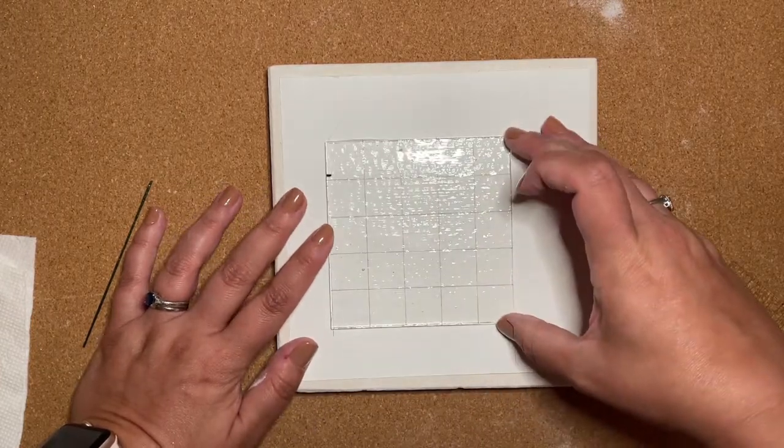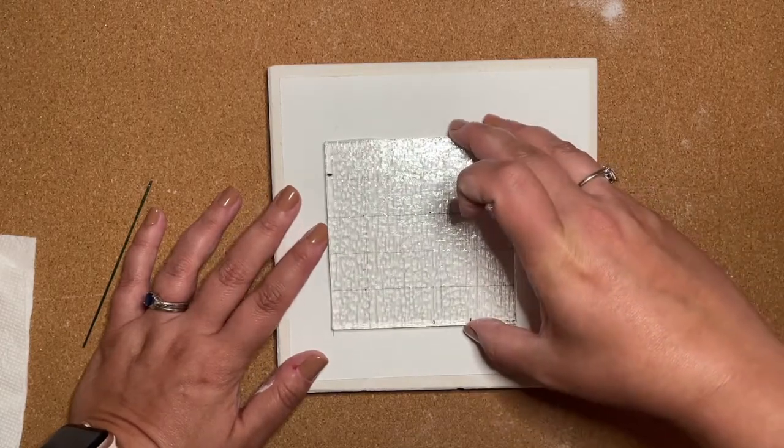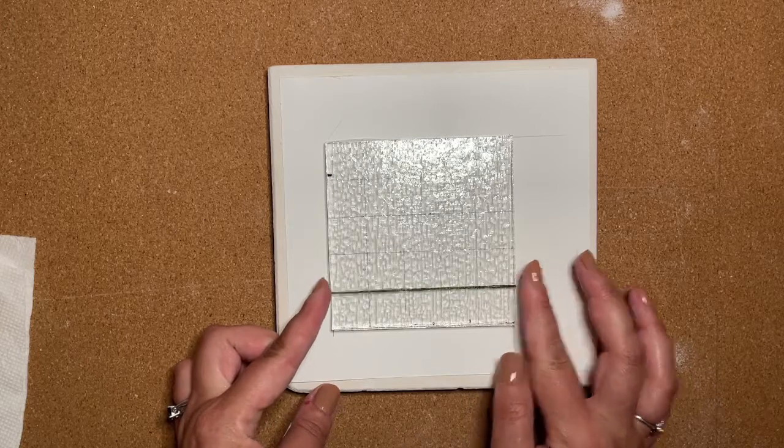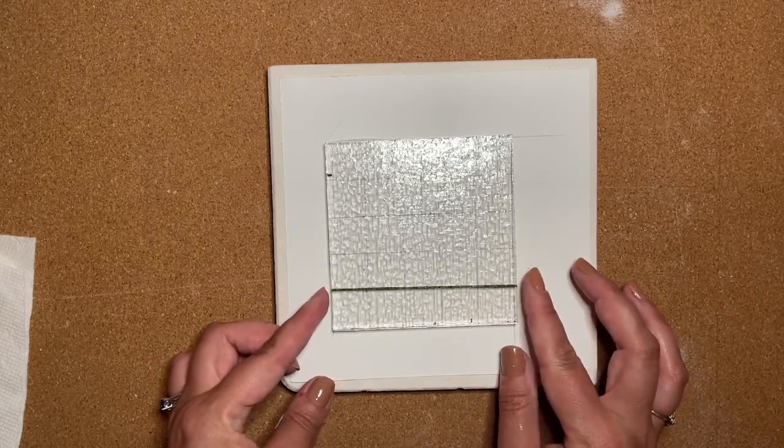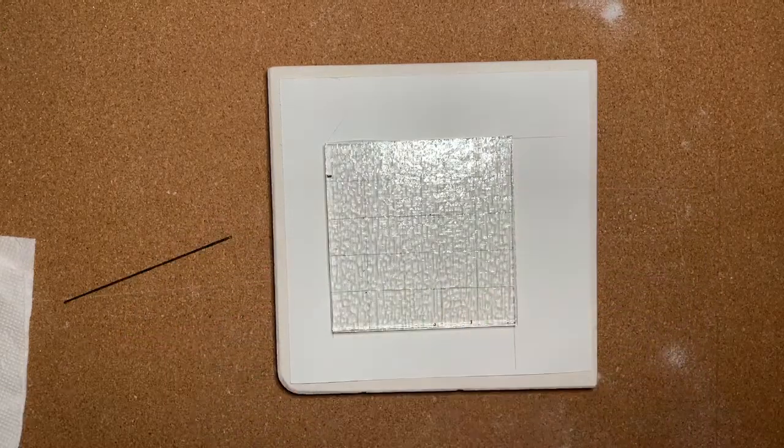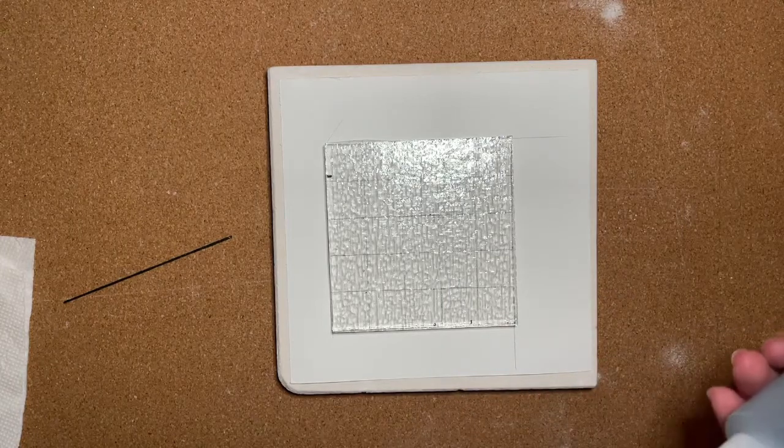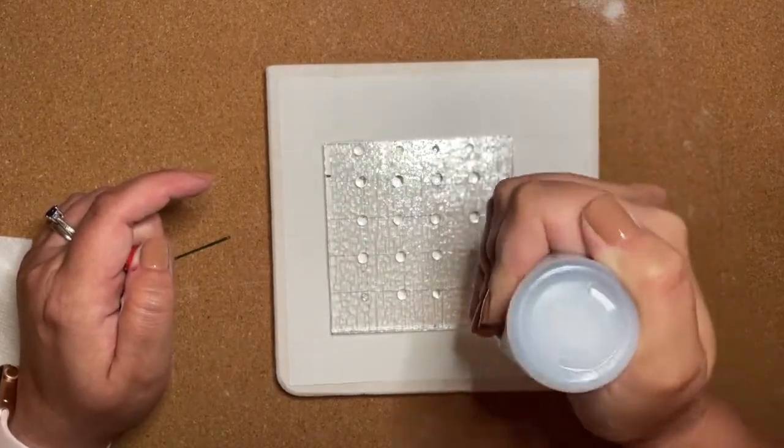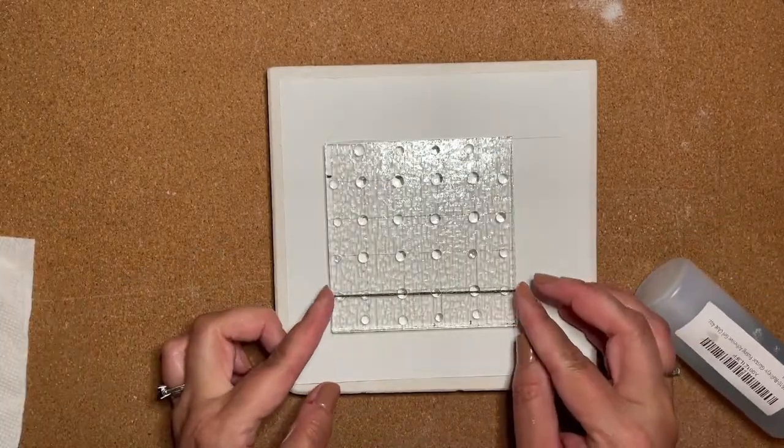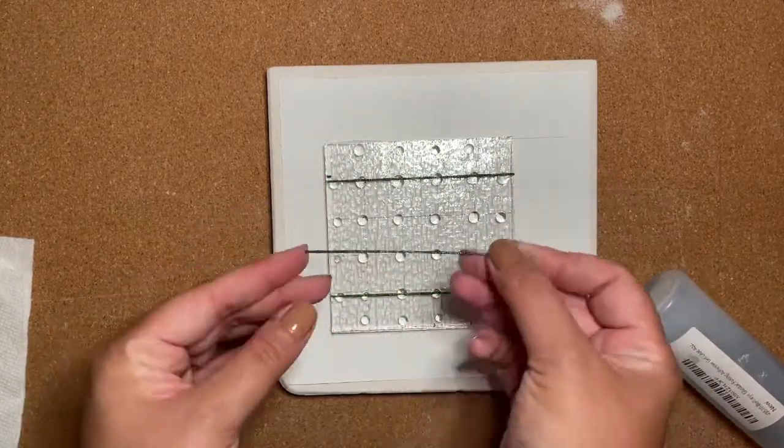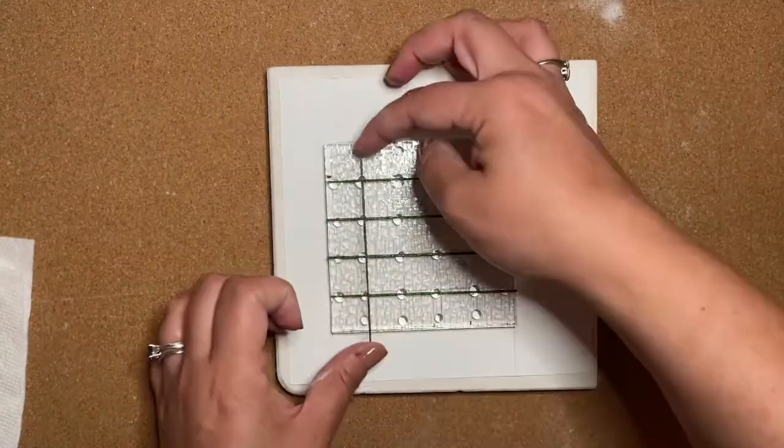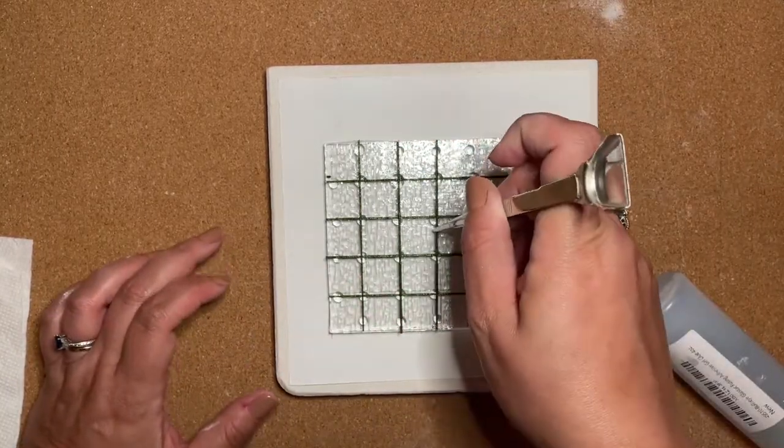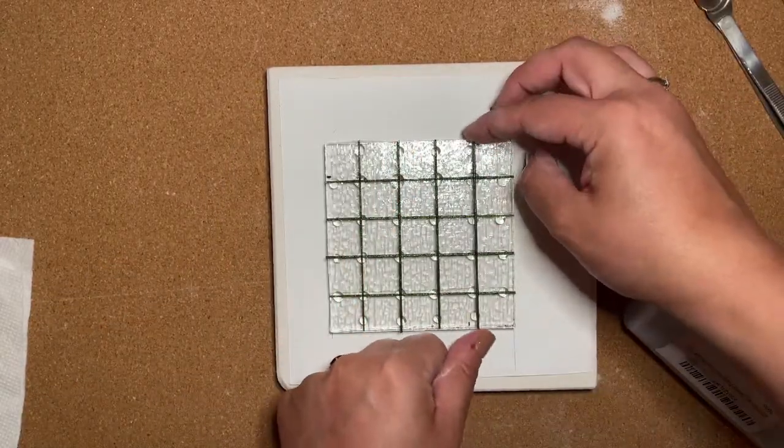I'm going to place my two pieces of glass on top of each other like so, and then I'm going to take these stringers and put them down according to the grid pattern that I have below. I'm going to be using the glass tack gel to make sure that everything sticks in place.